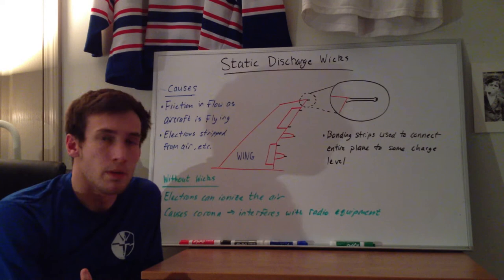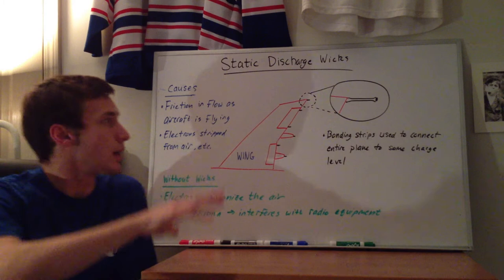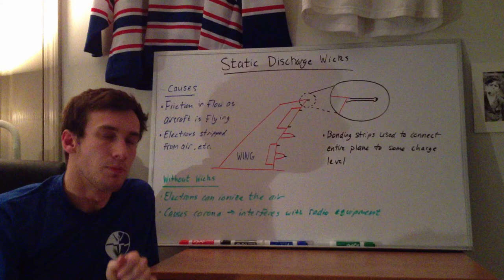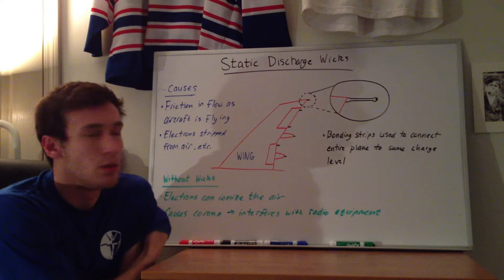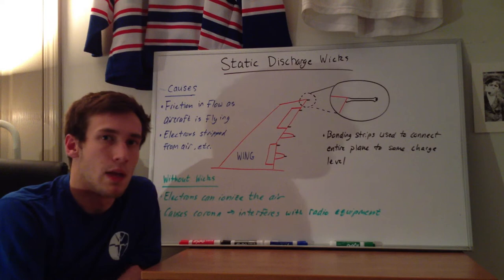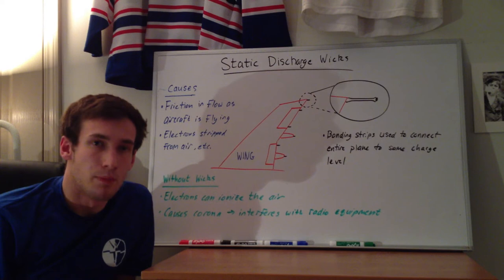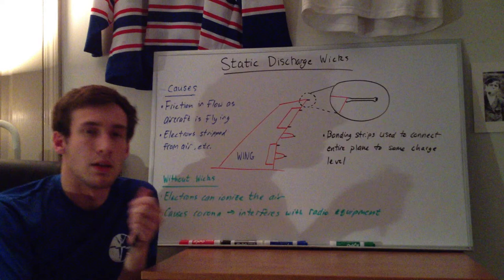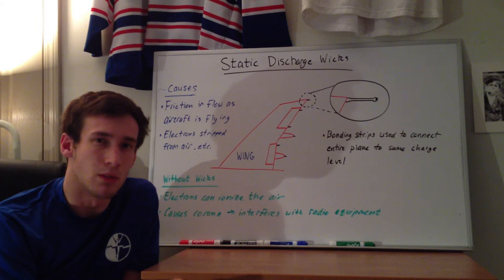When that happens, you have this kind of charge floating around on the plane. If you don't have these wicks, the electrons will tend to flow towards something like a sharp object where they can diffuse back into the flow. So they end up accumulating near the radio communications areas and antennas. The electrons can ionize the flow and create a corona — similar to what happens with reentry vehicles in the Earth's atmosphere, like the space shuttle, where the gas behind the shock wave ionizes and radio communication can be lost. That's obviously a bad thing to happen for a plane.